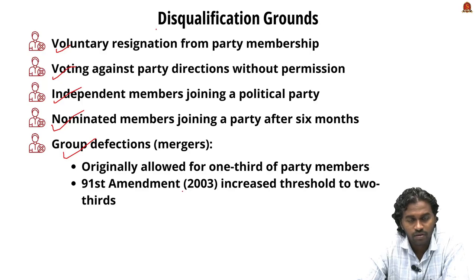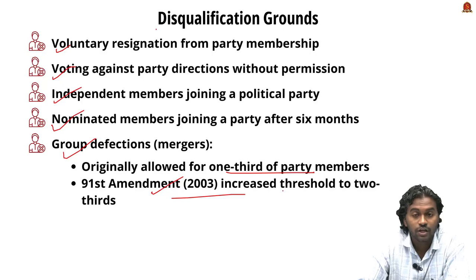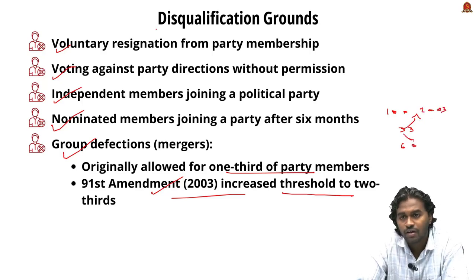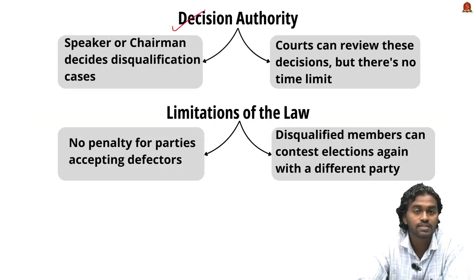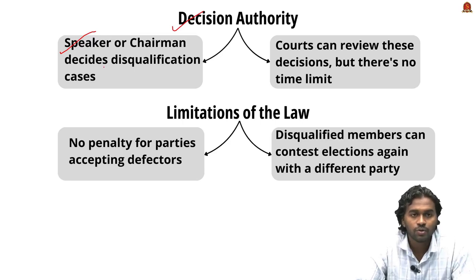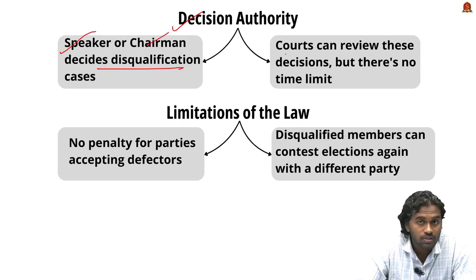Regarding group defections, originally until 2003, if one-third of party members defected it was not considered defection. Through the 91st Amendment, the threshold was raised to two-thirds. For example, if a party has 100 members, fewer than 66 switching their alliance after 2003 will be considered group defection. The Speaker or Chairman of the respective house has the authority to decide disqualification cases — the Speaker in Lok Sabha and the Chairman in Rajya Sabha — though courts can review these decisions with no time limit for rulings.